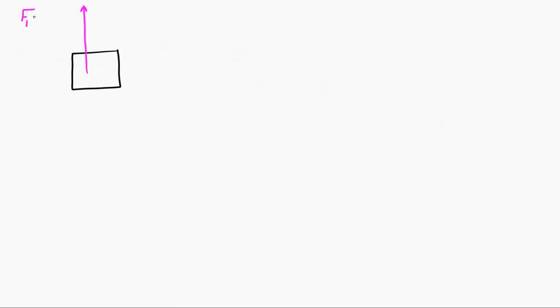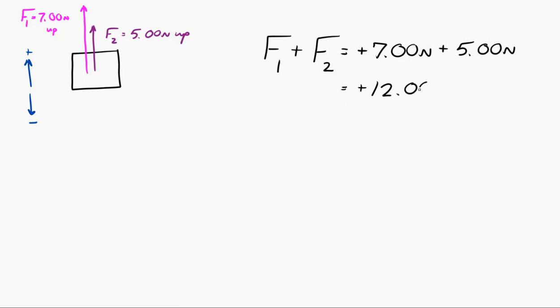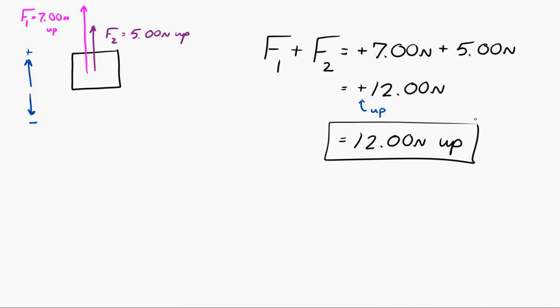Let's look at a separate example. Let's say I have 7 Newtons up plus 5 Newtons up. If I add those together, it's going to be 12 Newtons up. Let's go through the motions — F1 plus F2. Let's choose up as positive and down as negative. So I have plus 7 Newtons plus 5 Newtons, which is 12 Newtons, and I got a positive number, so that's 12 Newtons upward. That's a great way to add vectors together when they're all along the same dimension, but what if they're not? What if they're in two dimensions?